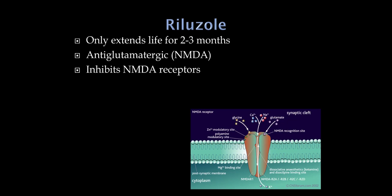Riluzole is an anti-glutamatergic medication against the NMDA receptor that may also inhibit glutamate release. The NMDA receptor has a magnesium binding site that must be displaced for flow of sodium and calcium through the channel. It's felt that overactivation of NMDA receptors may be responsible for destruction of motor neurons. Even in the best case, Riluzole extends life by only two to three months - not a dramatic breakthrough. There have been some recent exciting developments in ALS, but these are unlikely to be tested in a quick board review.